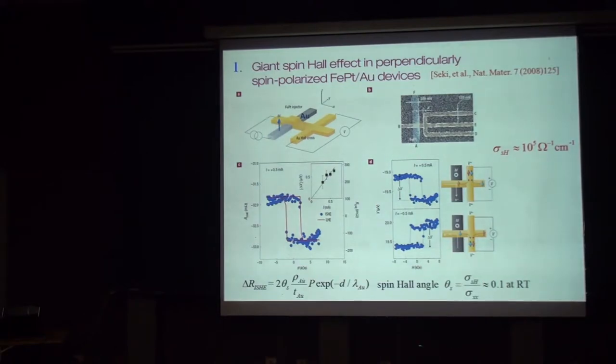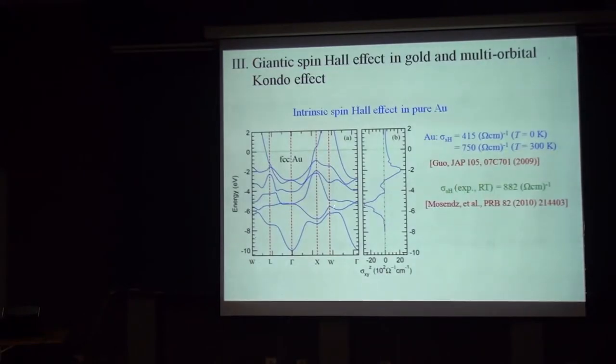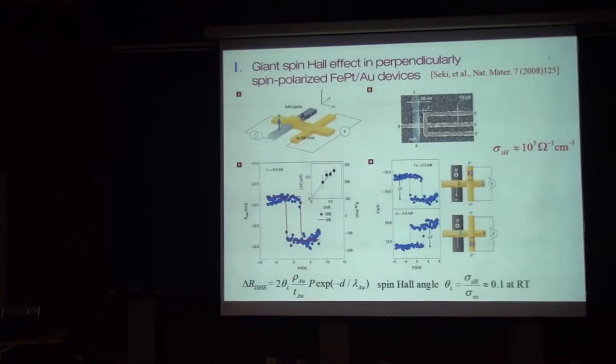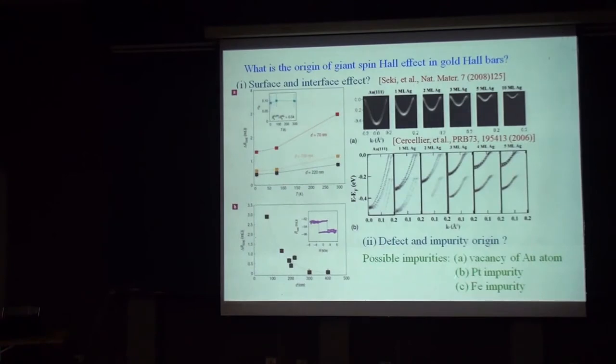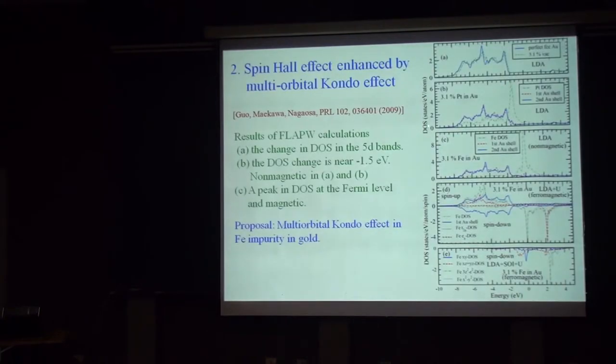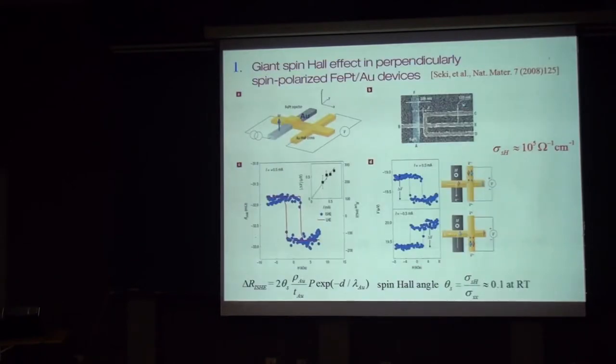Now, of course, the question is, why this happened? Because certainly this is not due to intrinsic effect. Because my calculation already showed that the intrinsic effect will be two or three order magnitude smaller. Now, one of the mechanisms they proposed is that gold 111 surface has a huge Rashba spin Hall effect. So this can be one of the mechanisms. But from my point of view, when I look at the paper again, you see this is the TEM image of gold Hall bar. And they made this using sputtering.